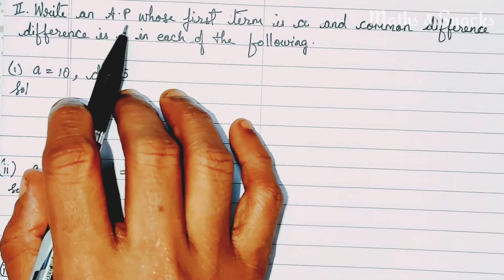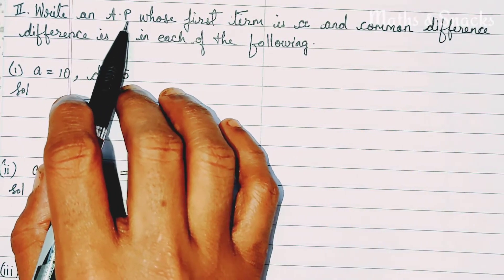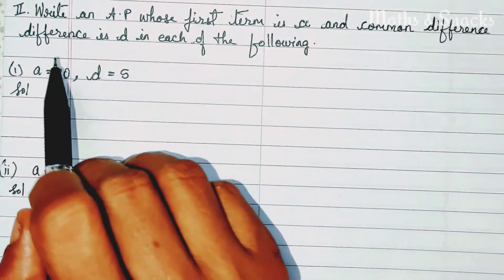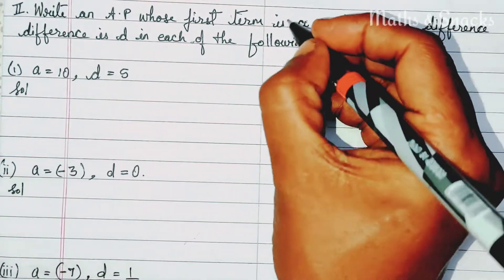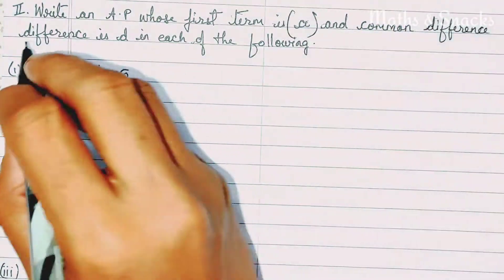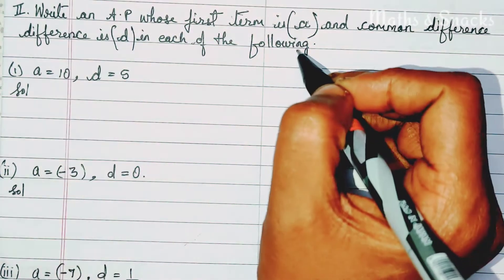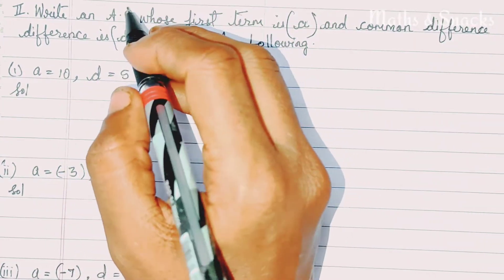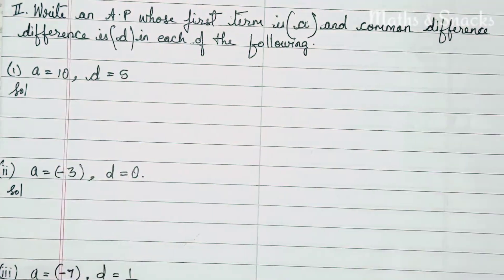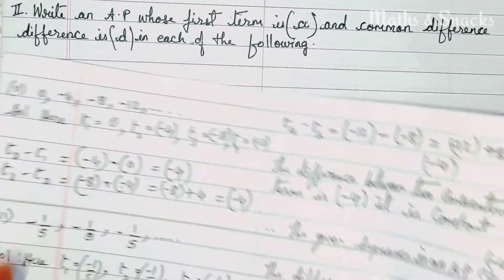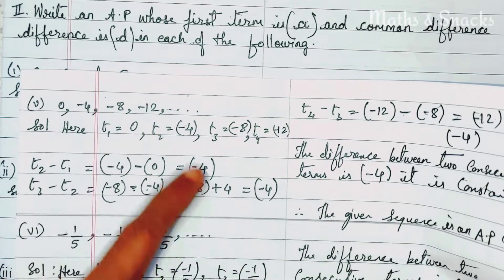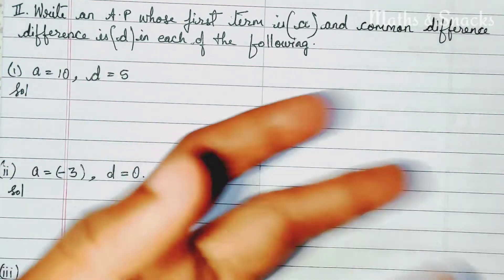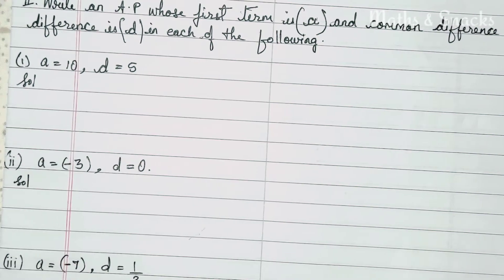Now the second heading: write an AP whose first term is a and common difference is d for each of the following. In the previous section, an AP was given and we found the first term and common difference. Now the first term and common difference are given and we have to write the arithmetic progression.